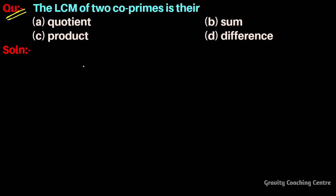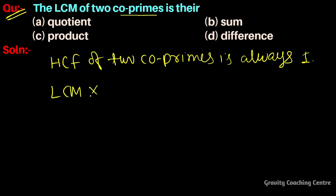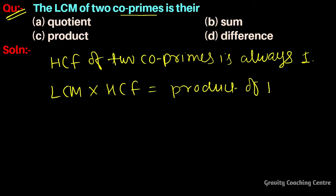The question: the LCM of two co-primes is their product, sum, or difference? We know that the HCF of two co-primes is always one, and we know that the product of LCM and HCF equals the product of the two numbers.